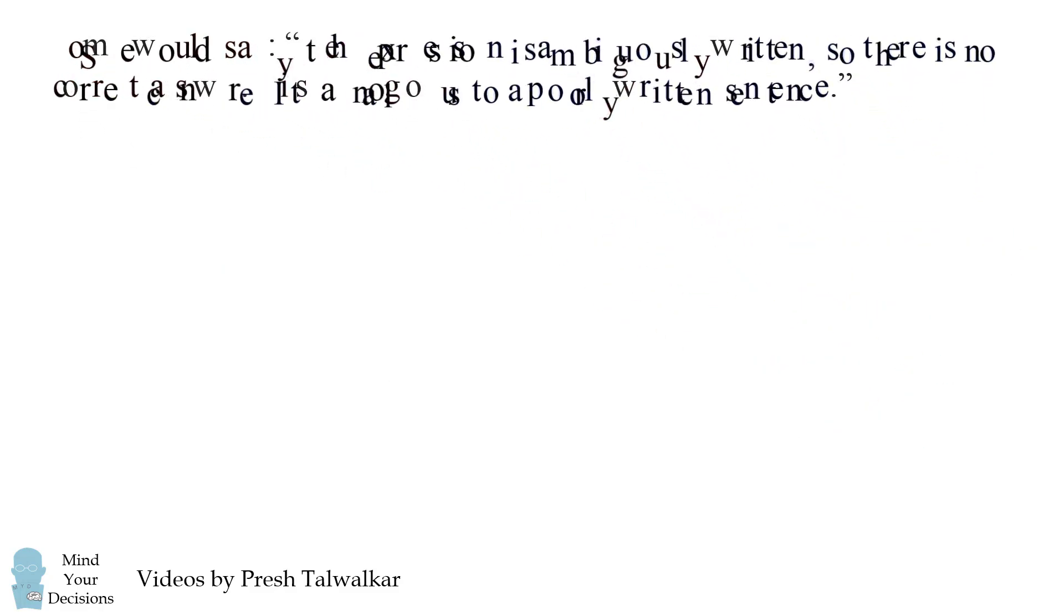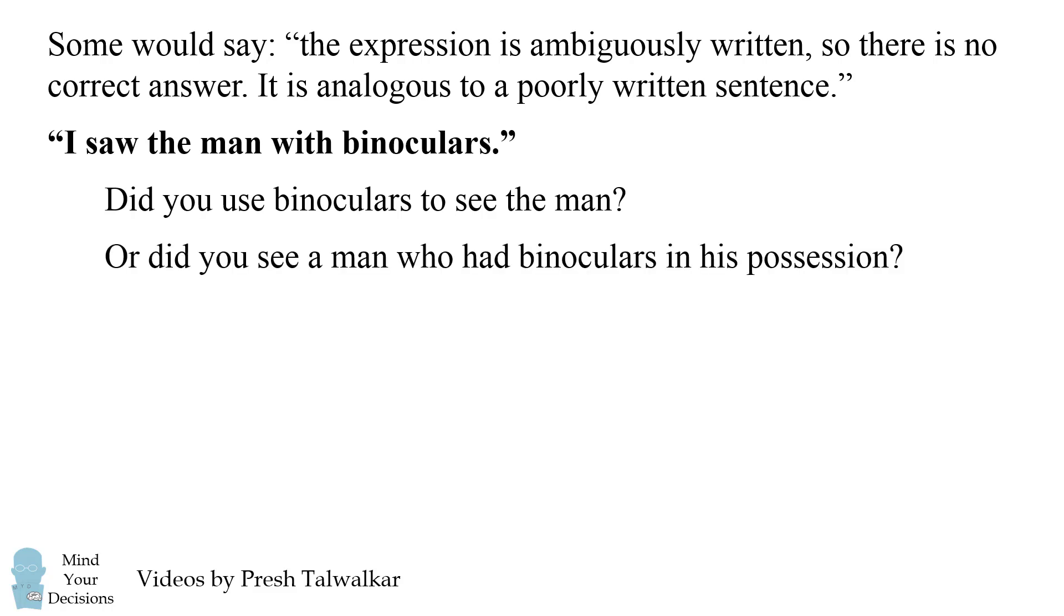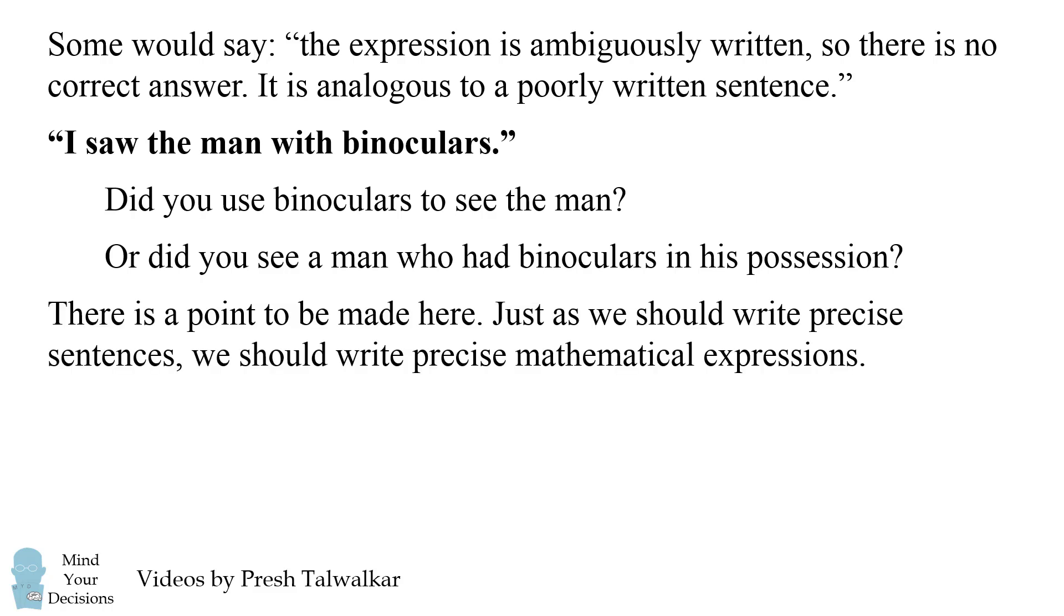So some people would argue the expression is ambiguously written, so there is no correct answer. It is analogous to a poorly written sentence. For example, take the sentence, I saw the man with binoculars. Does that mean you used binoculars to see the man? Or does it mean you see a person, a man, who had binoculars in his possession? It's an ambiguous sentence, and you could say there is no correct way to interpret this sentence.